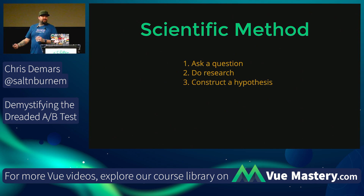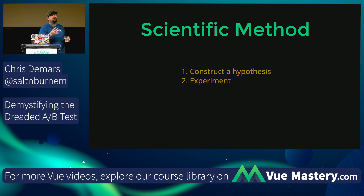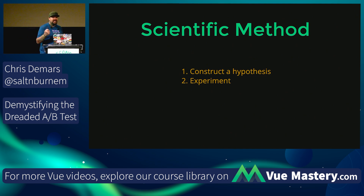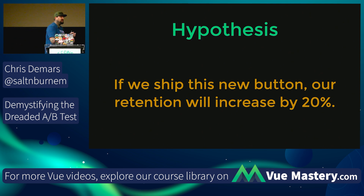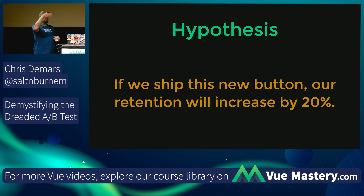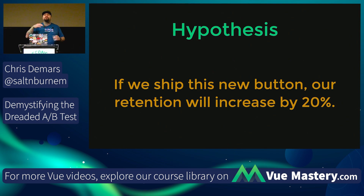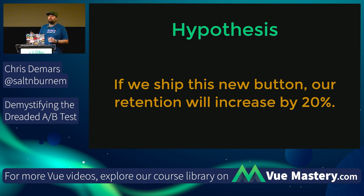The steps are: ask a question, construct a hypothesis, experiment, and draw the conclusion. But the only two you really need to worry about when setting up an A/B test are constructing a hypothesis and running the experiment. For example: if we ship this new button, our retention will increase by 20%. It might be 19%, it might be 25% — you want to hit your target number, find your true north, and move toward that hypothesis by running the experiment.